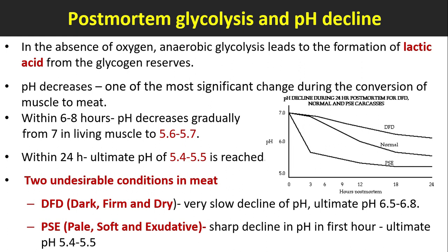Two undesirable conditions can result from abnormal pH decline. DFD (Dark, Firm, and Dry) meat results from a very slow decline in pH, with an ultimate pH of 6.5 to 6.8. PSE (Pale, Soft, and Exudative) meat results from a sharp decline in pH in the first hour, with an ultimate pH of 5.4 to 5.5.